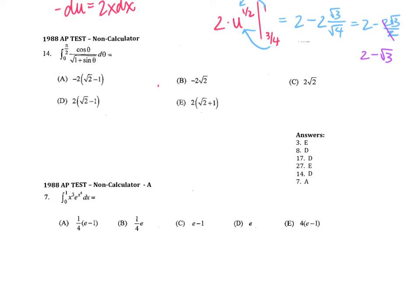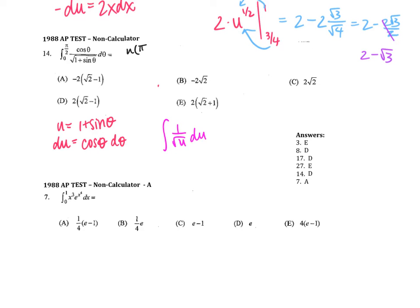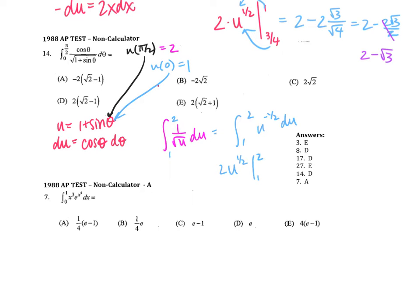This antiderivative looks pretty complicated, so I'm going to make my u equal to 1 plus sine of theta, because conveniently the derivative of sine of theta is cosine of theta d theta. I'm going to replace cosine of theta d theta with du, and I'm left with 1 over root u. Changing bounds: my upper bound of pi over 2 gives sine of pi over 2 equals 1, so the upper bound becomes 2. My lower bound was 0, giving 1 plus 0 equals 1. I rewrite 1 over root u as u to the negative 1/2, and the antiderivative becomes u to the positive 1/2 times 2, from 1 to 2.